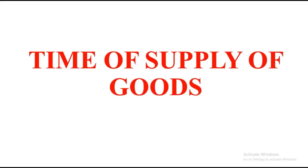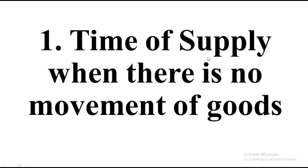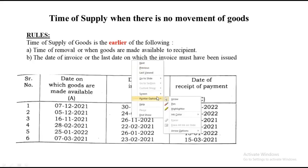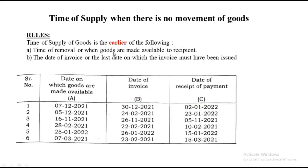Under this there are multiple types of sums that can come. The first type is: time of supply when there is no movement of goods. If there is no movement of goods, how to solve the sum and how to identify that particular sum. The rule is: the time of supply will be the earlier of the date when goods are made available, or the date of invoice.